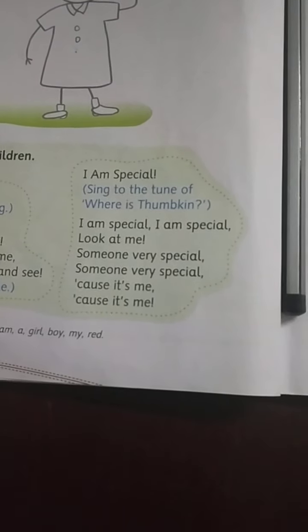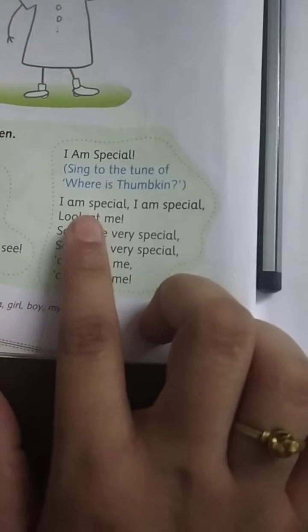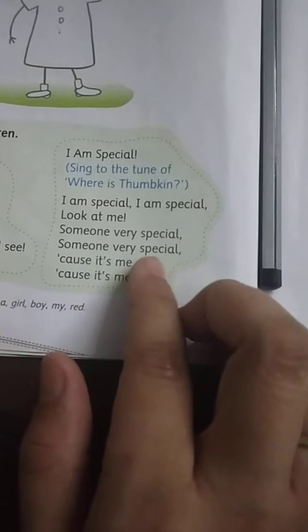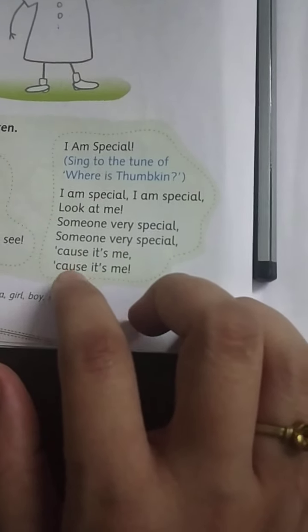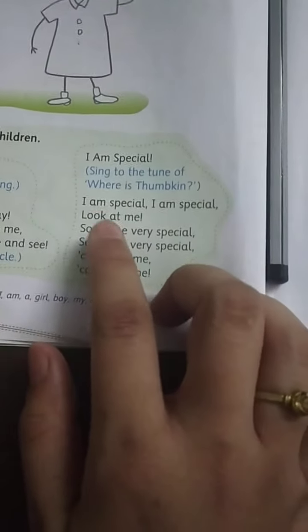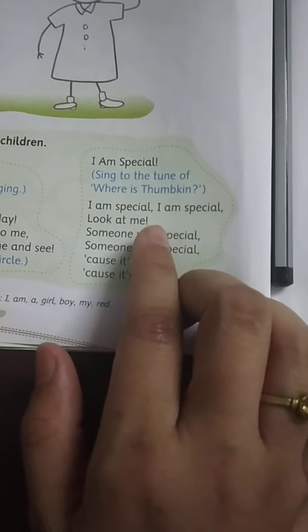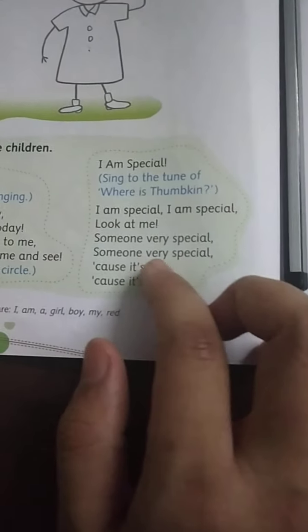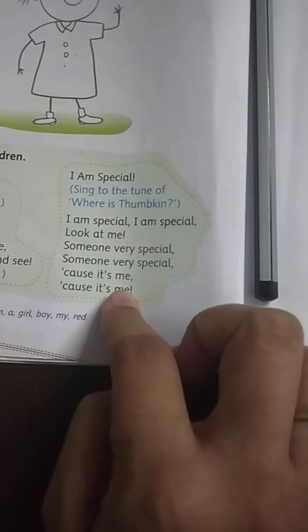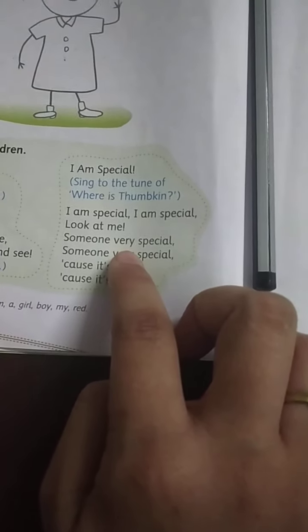This is the next rhyme and it is a very easy one — the easiest. So I think you will learn it. Let's just sing with me: I am special, I am special, I am special. Look at me, look at me. Someone very special, someone very special. Cause it's me, cause it's me. Isn't it the easiest rhyme? So just repeat it again and again and learn it.